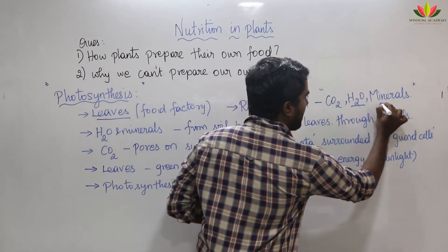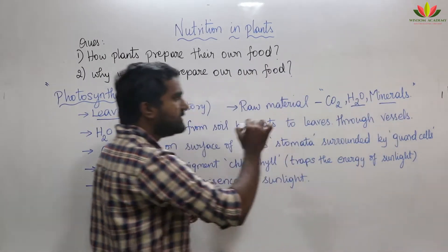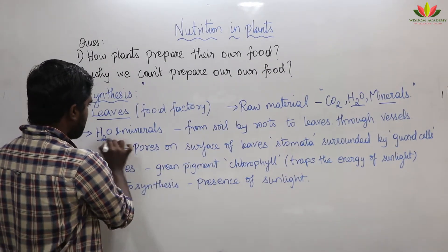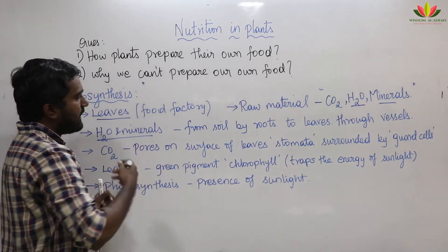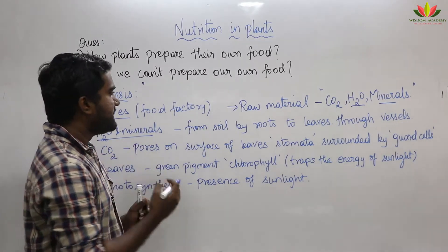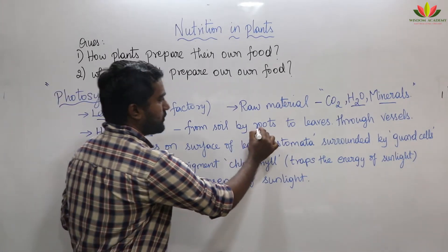The first raw material is water and minerals. Water and minerals are taken by the plants by means of roots.